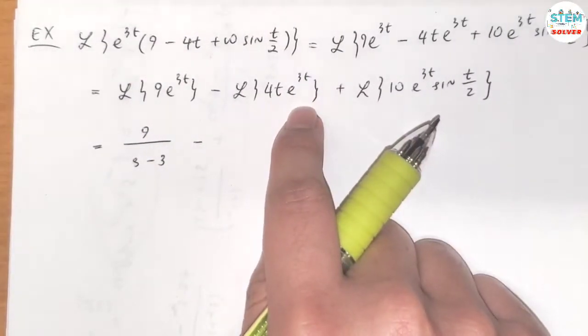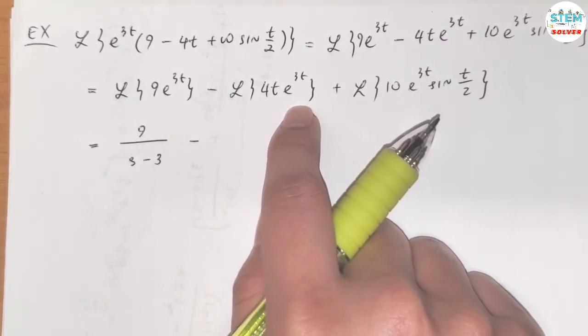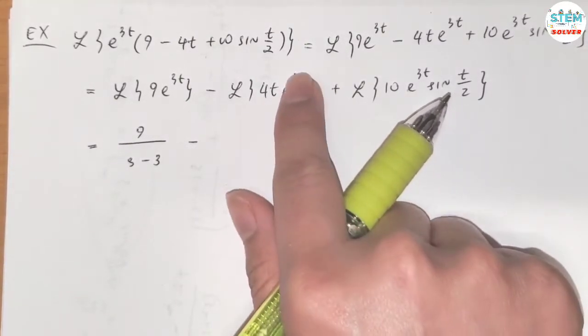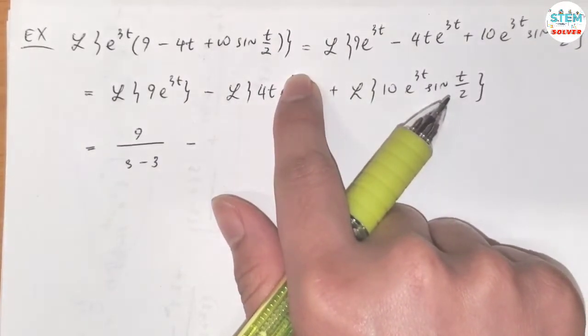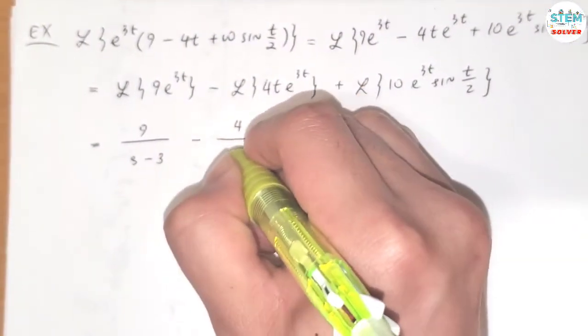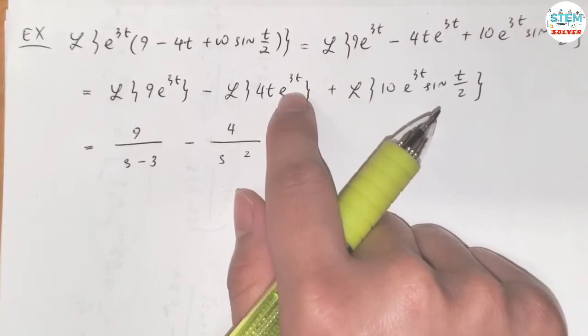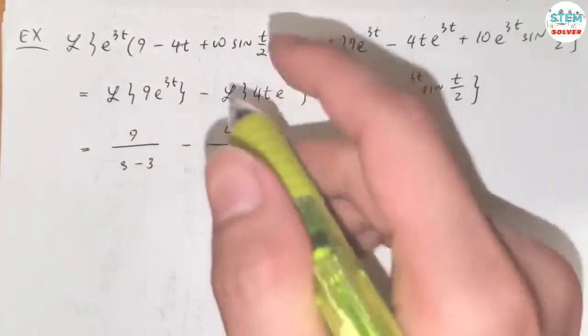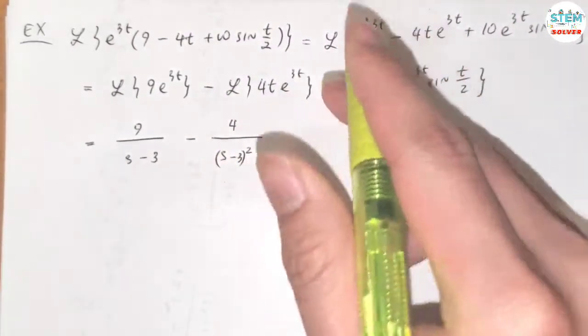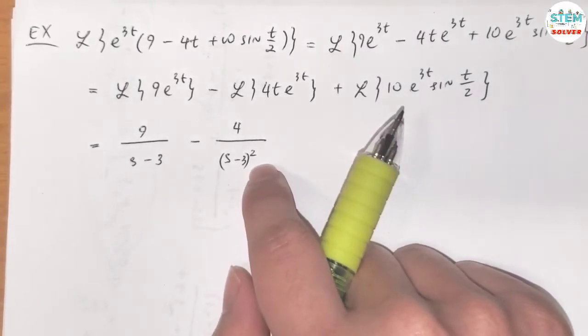Now for this one, we are going to use the translation on the s-axis theorem. So let's ignore this first. The Laplace transform of 4t is equal to 4 over s squared, right? But we have the translation here. So the a is 3, so you have s minus 3. So it's shifted to the left 3 units.